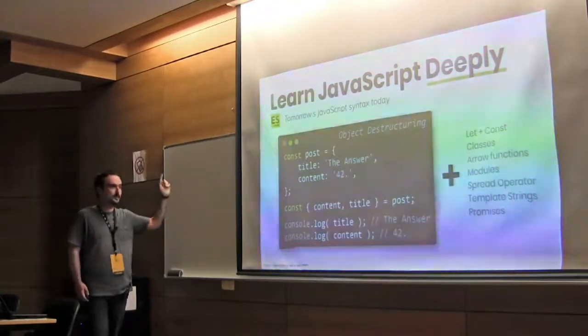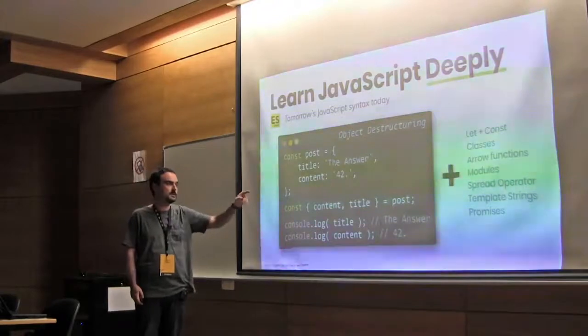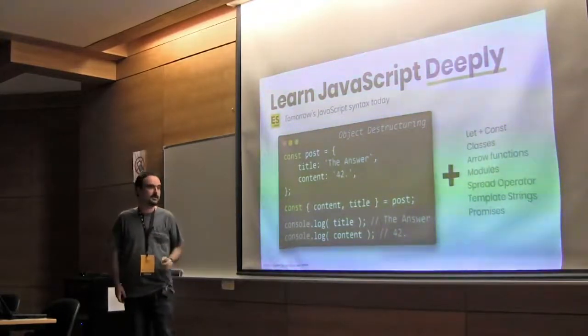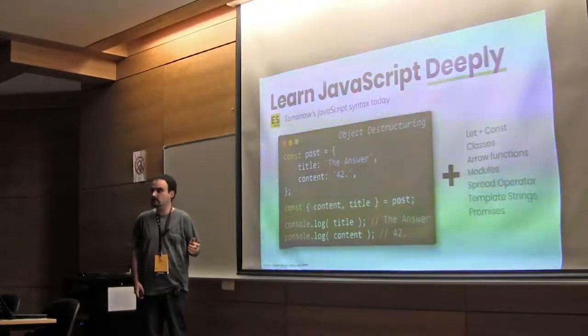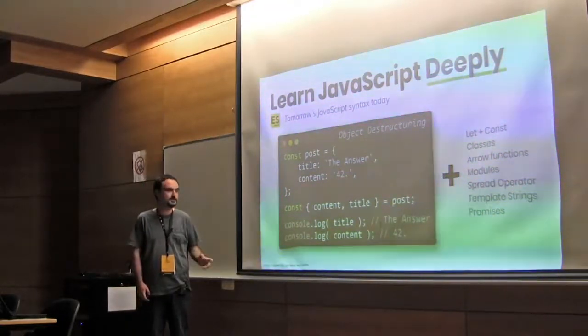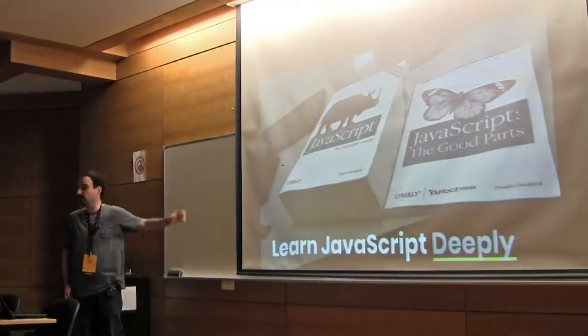So, you can use directly title and content instead of doing post.title or post.content. So, this occurs in every file in Gutenberg. Learn that, plus the use of let and const for variables, classes, arrow functions and all this stuff. This will take you at least one or two hours to learn, so it's pretty easy. You don't need that big book, okay?